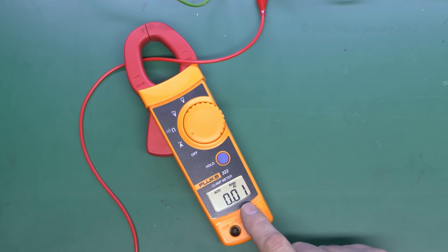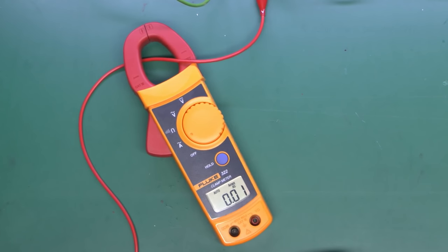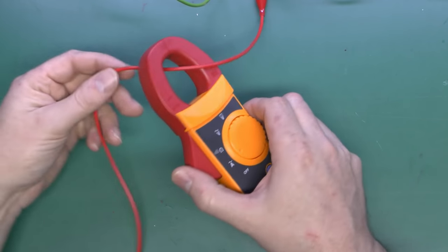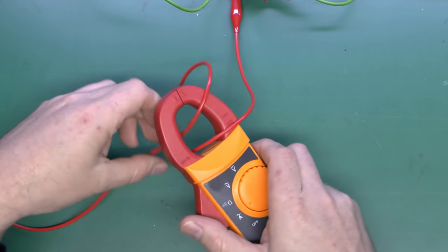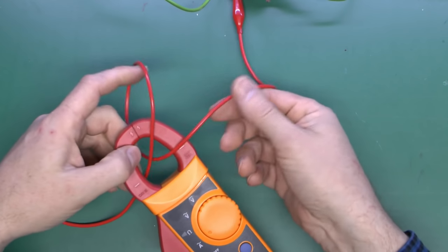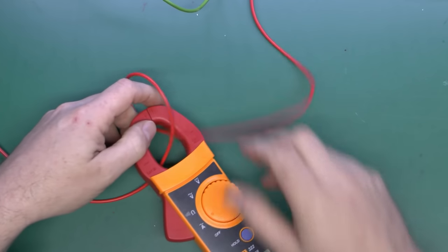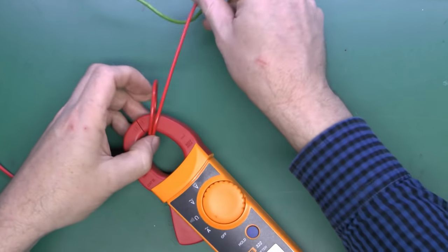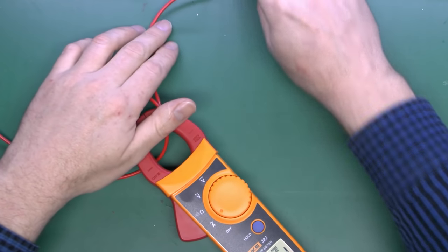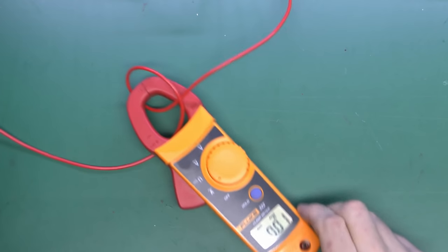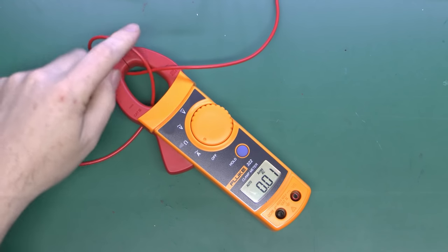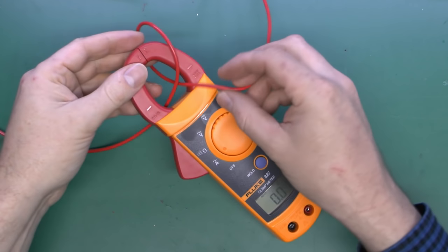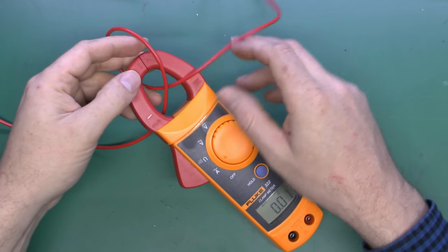Now if you're going to measure a very low current, say lower than the thing is really intended for, what you can do is instead of just putting a single loop through here, you can actually put two loops through. If we loop that around, we've now got two wires effectively going through here, although they both happen to be the same. So what we should now see is the current on the display is double what it was before.